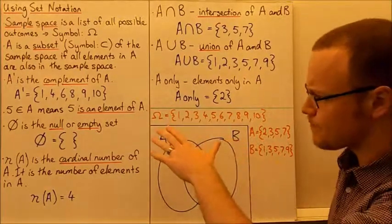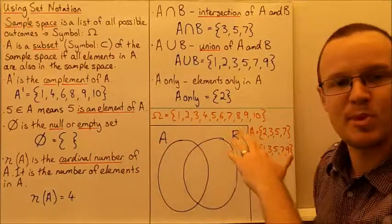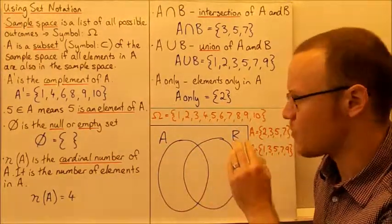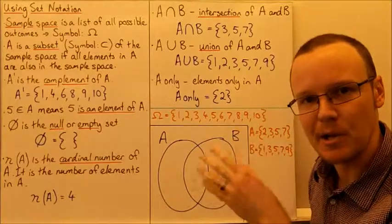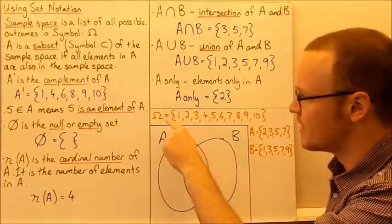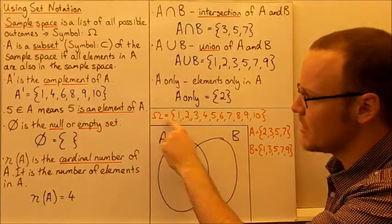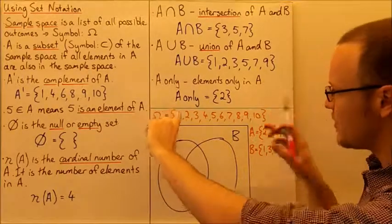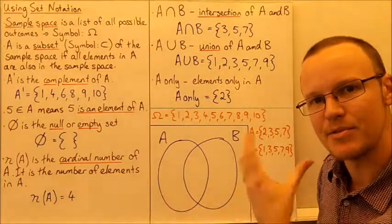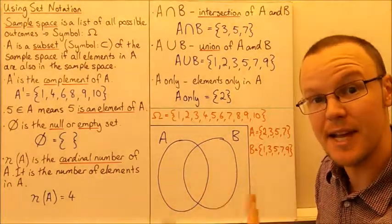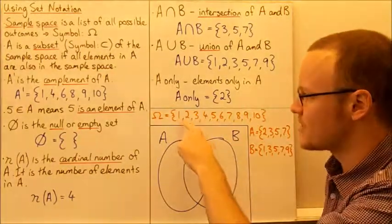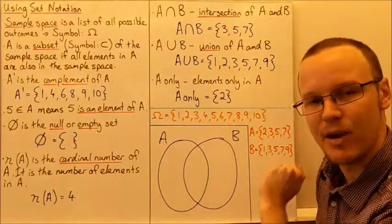If we have a look here, this sample space is all of the positive integers from 1 to 10 inclusive — that means they include 1 and they include 10. You can see here this is the sample space, and we've enclosed all of the values in the sample space inside brackets and separated each one with a comma.